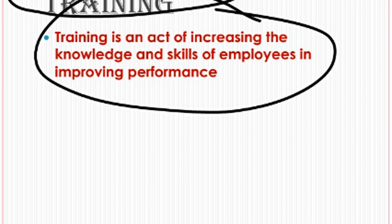Training is basically an act of increasing the knowledge and skills of employees in improving their performances, letting them give their 100% towards the organization. The major outcome of training is learning — sikha na — ki kaise ek job ko effectively perform kiya ja sake, 100% diya ja sake.